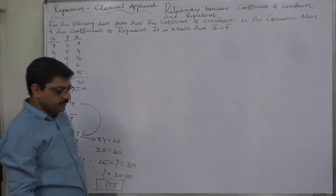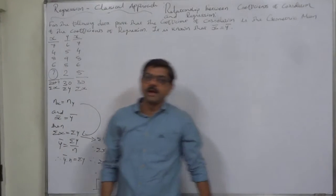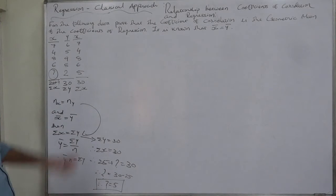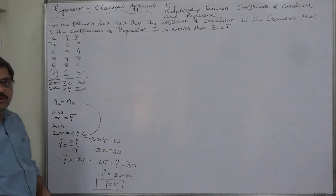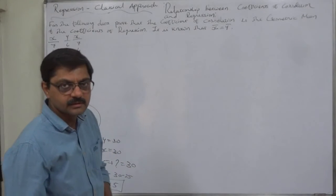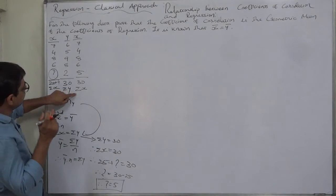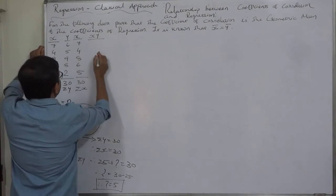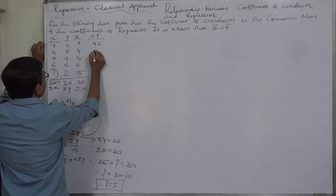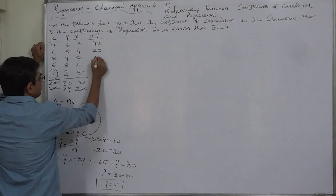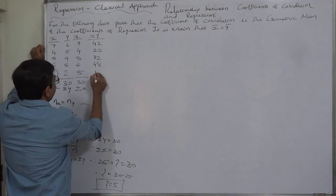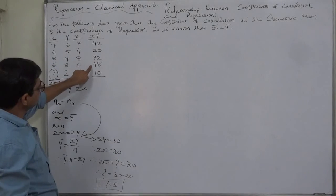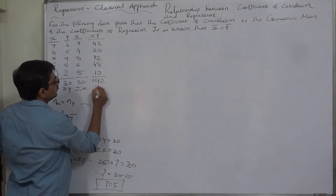We will use the direct values formula: n·σxy − σx·σy over the respective denominators. Let us build the table. The xy column: 6×7=42, 5×4=20, 9×8=72, 8×6=48, 2×5=10. Summing: 42+20+72+48+10 = 192, so σxy = 192.